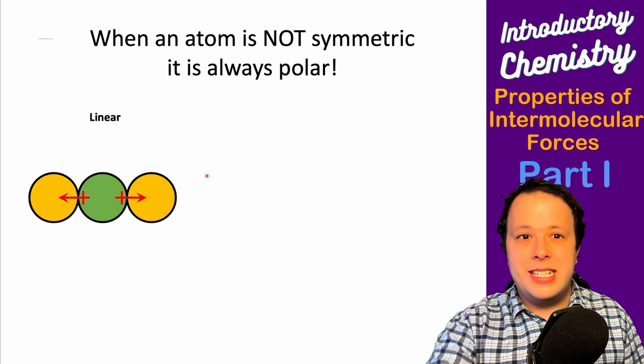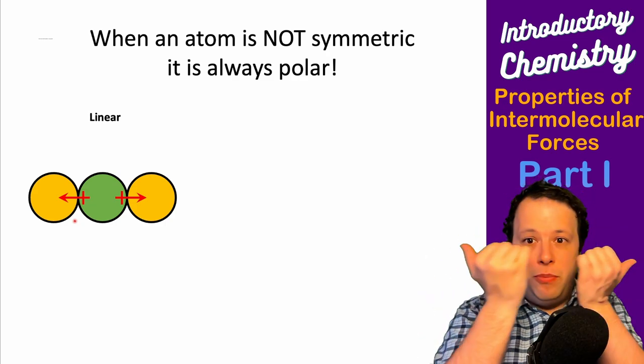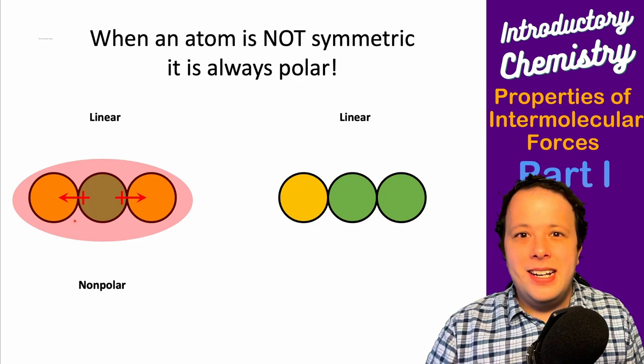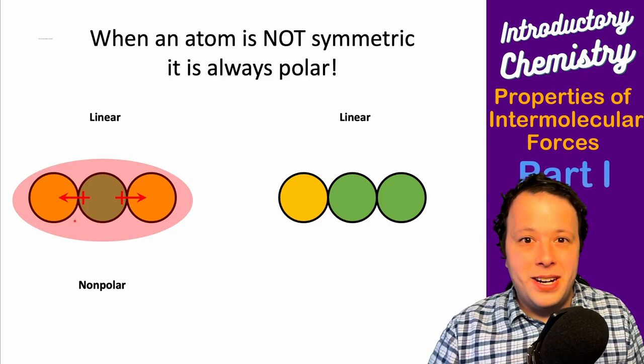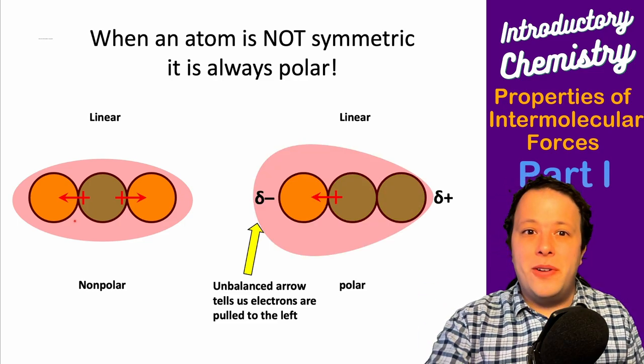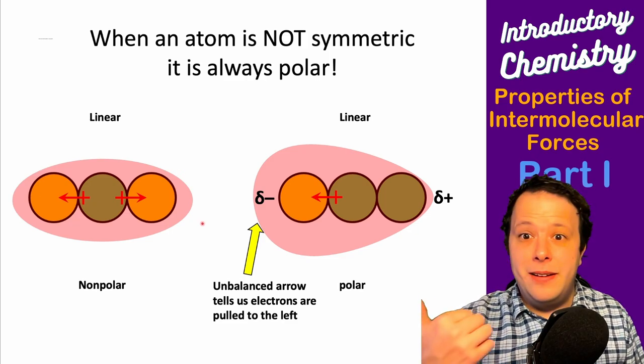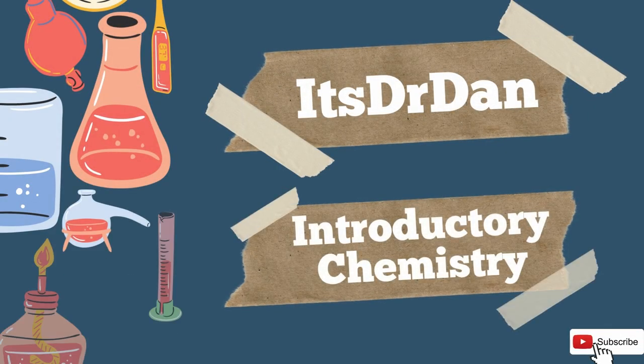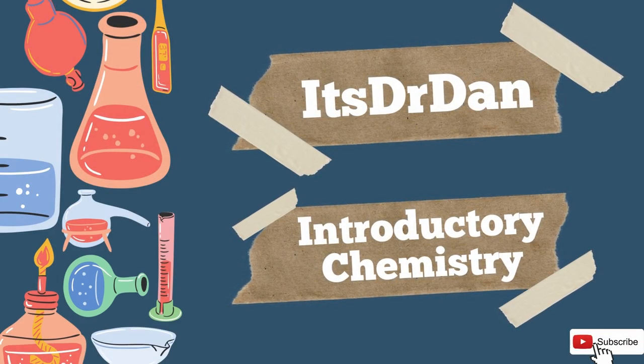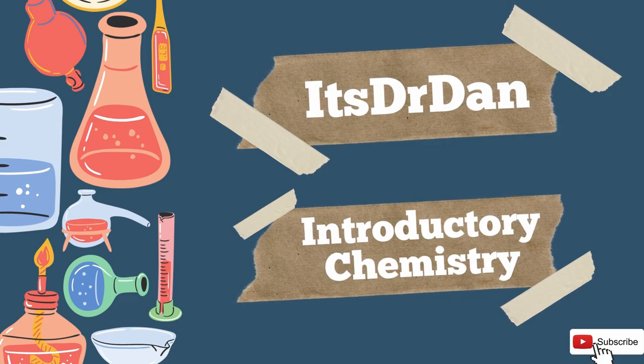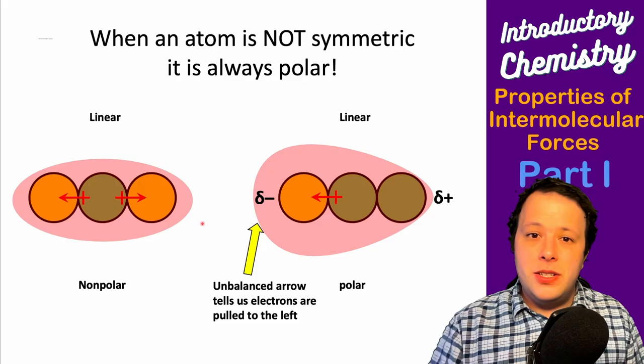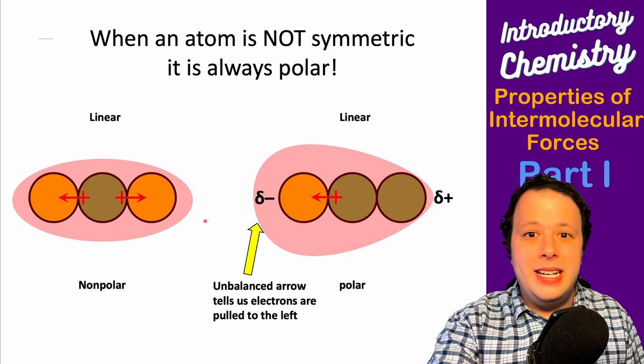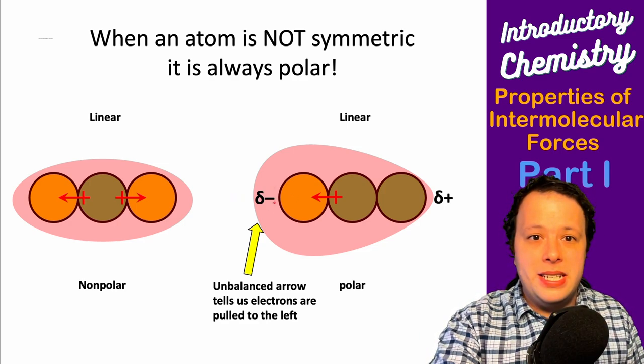Here I have a linear example where we see the same atom on both sides pulling in opposite directions, so this is non-polar. The second I replace one of them with a different atom, it's unbalanced, which is the important thing we're trying to visualize here.